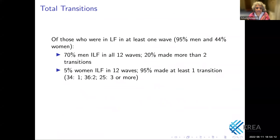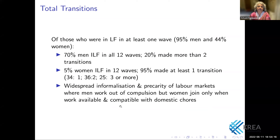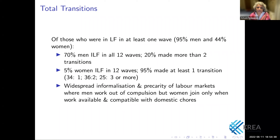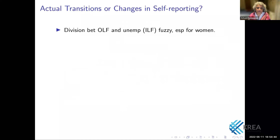This fact should make you think it cannot be the supply side factors we mentioned earlier, because those things don't change so rapidly. Our interpretation of this repeated entry and exit is the following: there is widespread informalization and precarity of labour markets. Men have to work out of compulsion, but women join the labour force or work only when it is available and compatible with domestic chores. Men have to do whatever they need to earn a livelihood.